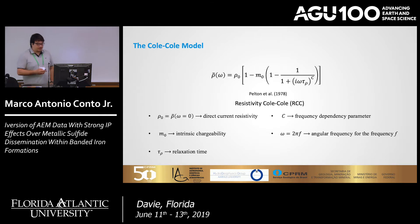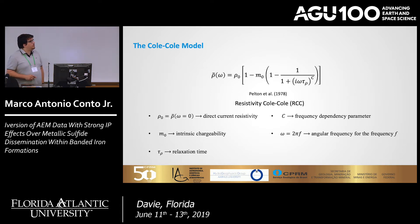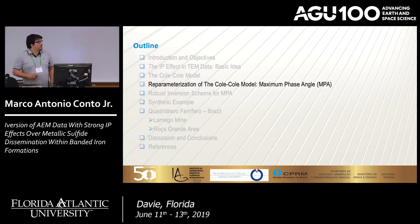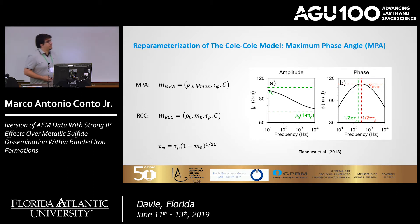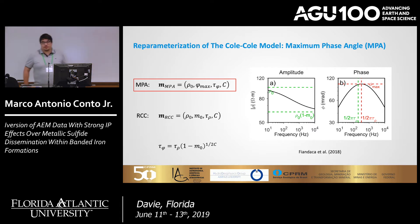I'll call the resistivity Cole-Cole model RCC from now on. In our work, we use a different approach. Instead of using the chargeability in the ordinary Cole-Cole model, we use the maximum phase value of the phase spectra — we call this the MPA. We also replace the relaxation time with the one associated with the maximum phase value, and they are related through a defined relation. The idea, discussed in Shandaka et al. 2018, is that when we use this parameterization, we decrease the correlation between the four parameters and obtain a more independent, better-conditioned model space, enabling better interpretation of results.